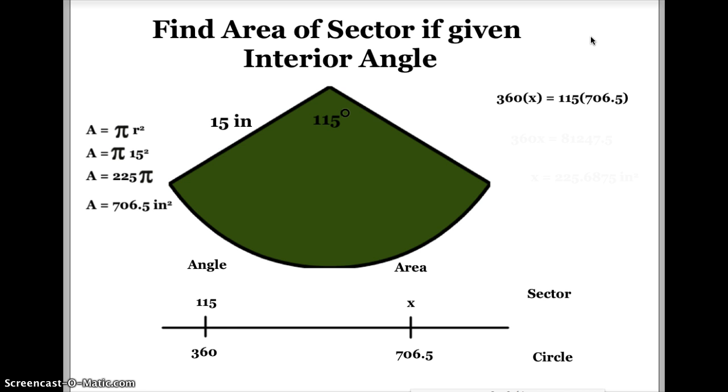Now, the next part what I'm going to do is I'm going to take 360 times x, and then take 115 times 706.5. So I'm just basically multiplying out both sides. And I end up getting 360x is equal to 81,247.5.